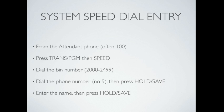You have to be at the attendant phone, which is on extension 100. Press the Transprogram button, then Speed. Dial the bin number, which starts at 2000 and goes to 2,499. Dial the phone number without a leading 9, then press Hold/Save. You can enter the name, and then press Hold/Save again.